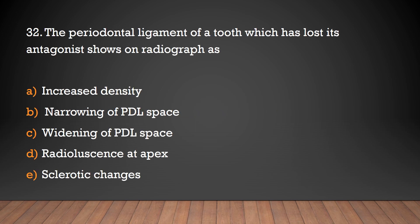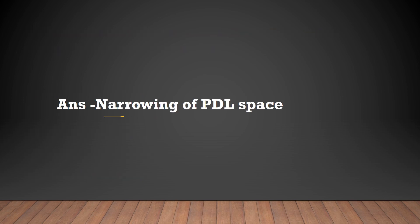The periodontal ligament of a tooth which has lost its antagonist shows on radiograph as: increased density, narrowing of periodontal space, widening of periodontal space, radiolucency at apex, or sclerotic changes. The answer is narrowing of periodontal space.